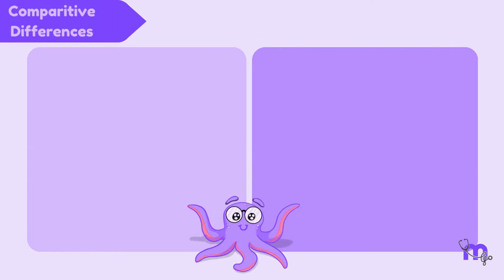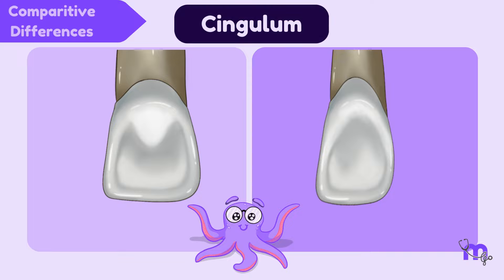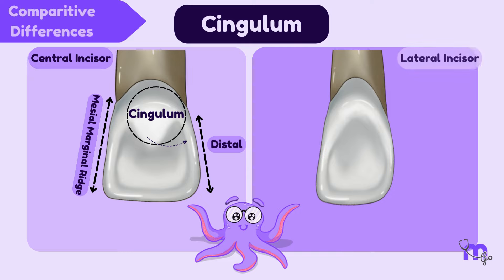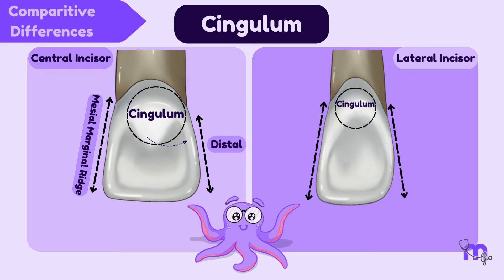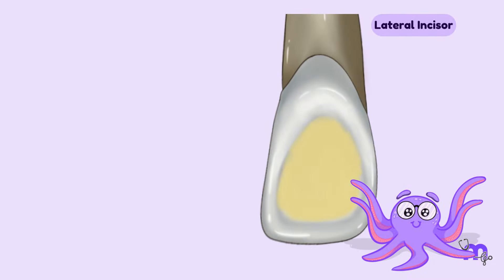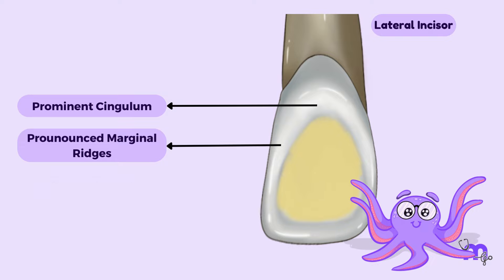To observe the comparative differences from the lingual aspect, direct your attention to the cingulum. In the maxillary central incisor, the cingulum is slightly offset towards the distal side, which results in a longer mesial marginal ridge. Conversely, in the lateral incisor, the cingulum is positioned almost at the centre, creating equal mesial and distal marginal ridges. In addition, the lateral incisor exhibits more pronounced marginal ridges, a more prominent cingulum, and a deeper lingual fossa.